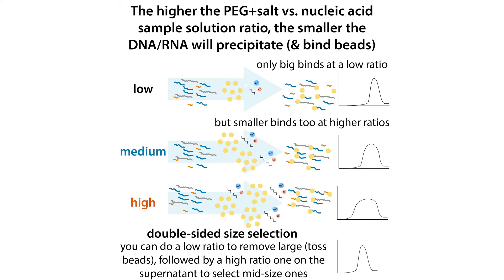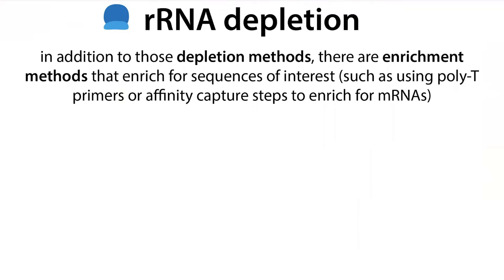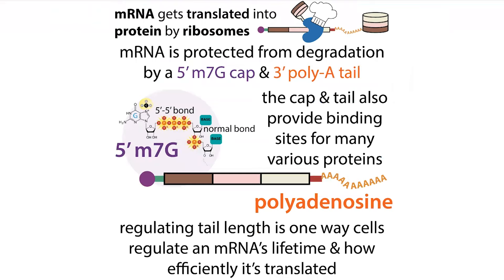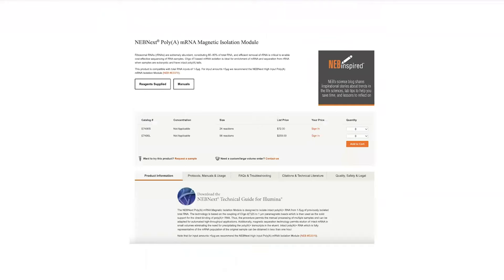In addition to depletion methods, there are also enrichment methods — instead of removing the rRNA, you pull out the messenger RNA specifically. mRNA gets a polyadenosine tail — a string of A's — at its end. You can use beads attached to poly-T sequences, which bind those poly-A tails and allow you to separate out and enrich for messenger RNAs.